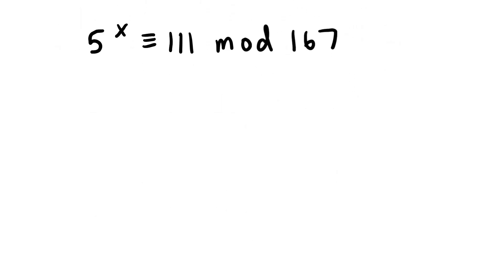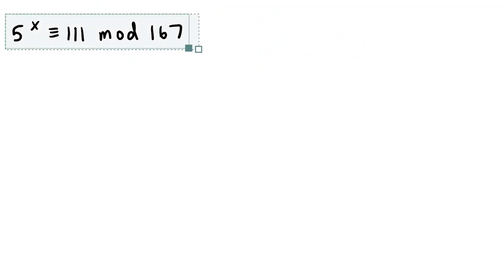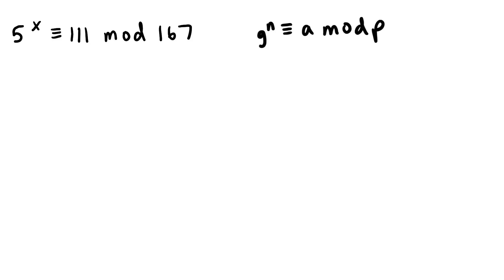So this is our problem for today. It's a little big so I'm going to shrink it a bit. So today we have 5 to the x which is congruent to 111 mod 167. So if you remember from last time, we had our general formula as g to the n is congruent to a mod p. And we want to be solving for this exponent right here. So in this case we want to solve for x.